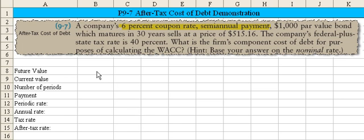Here's one way to solve it. Let's drop in what we know. The future value is $1,000. The current value, we'll enter that as a negative, is $515.16.